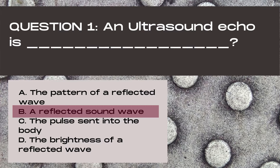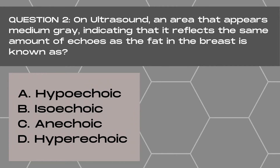In ultrasound, a transducer sends a sound wave out into the tissue, and that sound wave bounces off a structure or tissues in the body, and a reflection is sent back to the transducer. This reflection is known as an echo, and it gives us characteristics about the type of tissue or structure that it bounced off of.